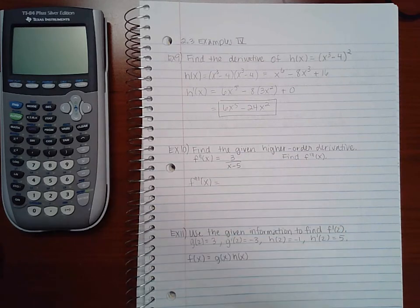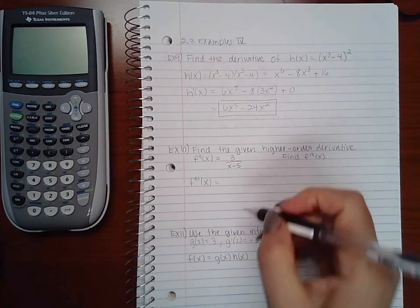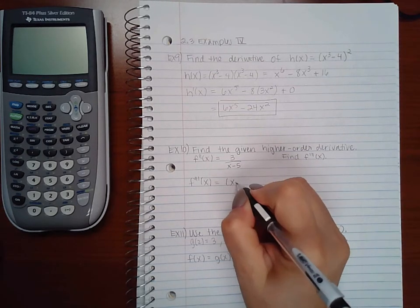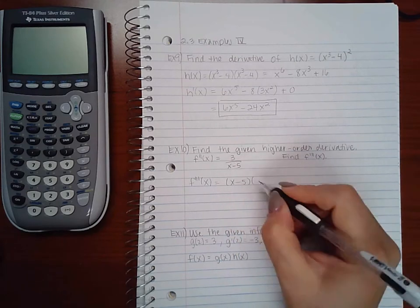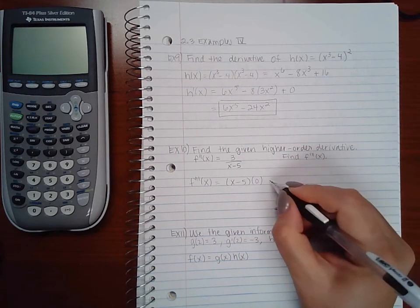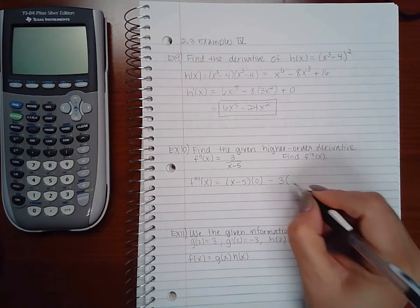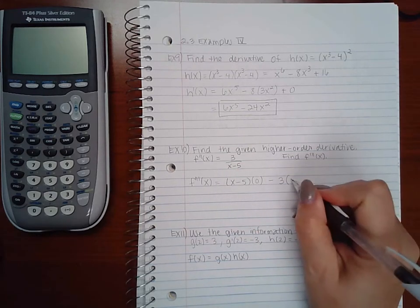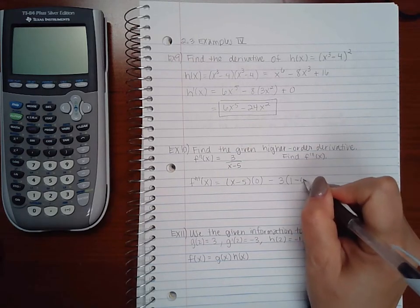But this is a fraction so I will have to use the quotient rule. So low d high, the derivative of a constant is 0, minus high d low, the derivative of x is 1, the derivative of 5 is 0.